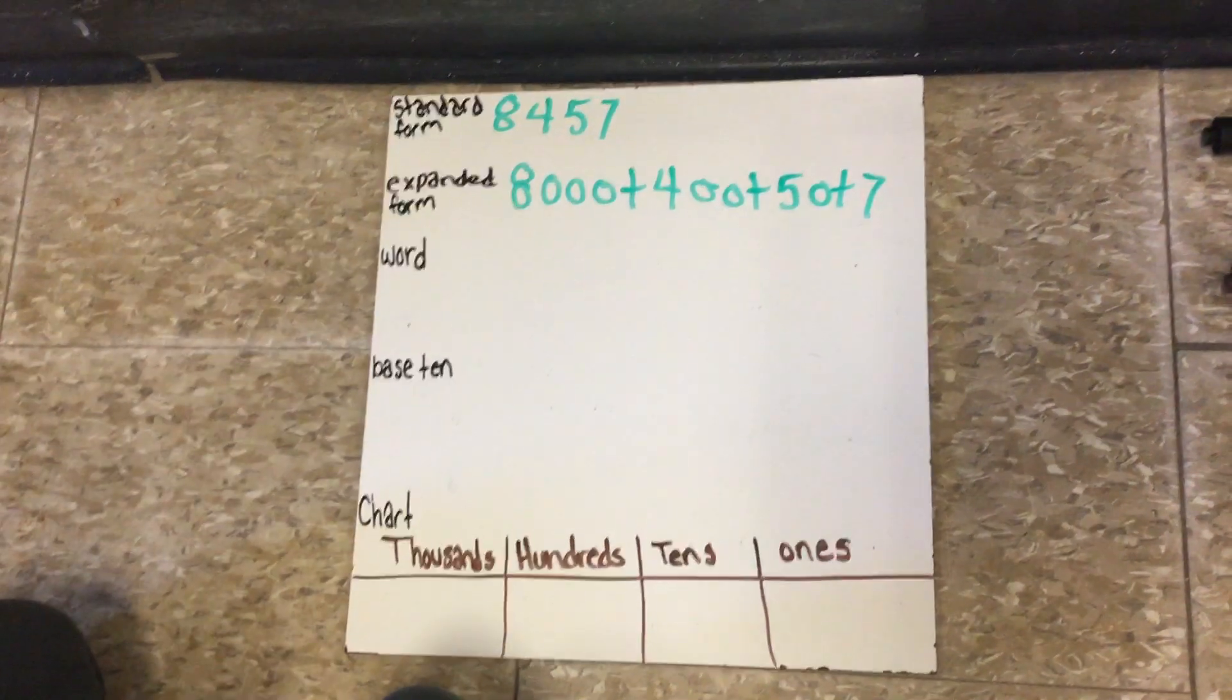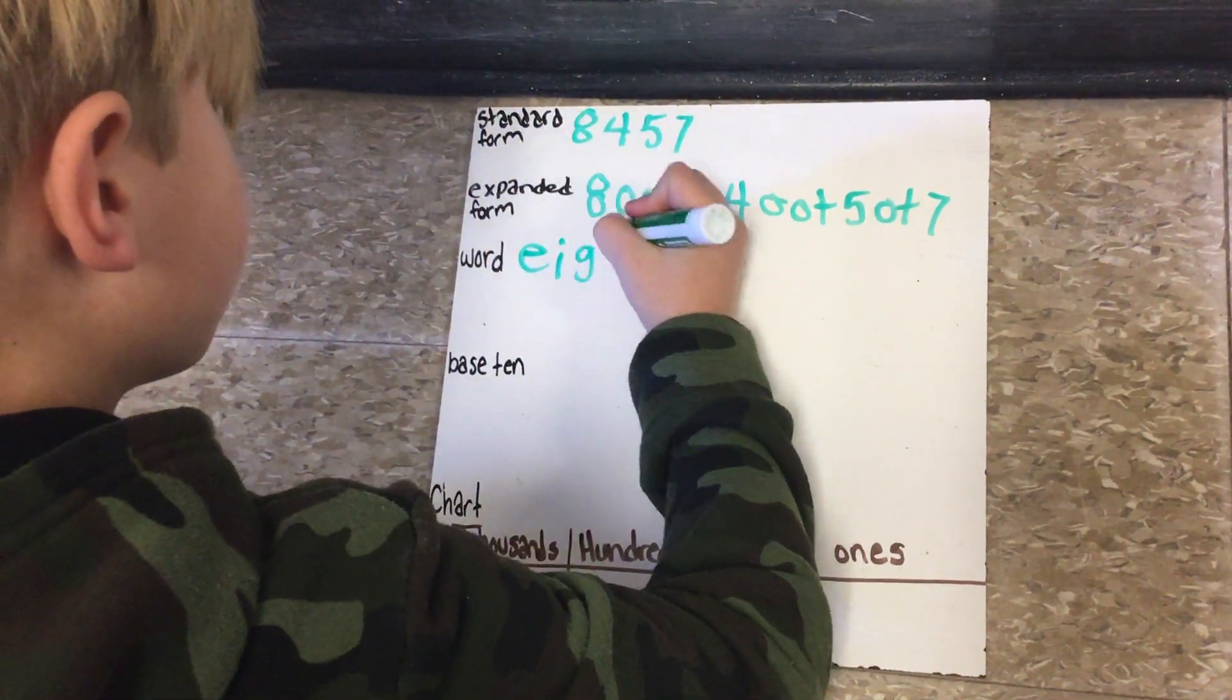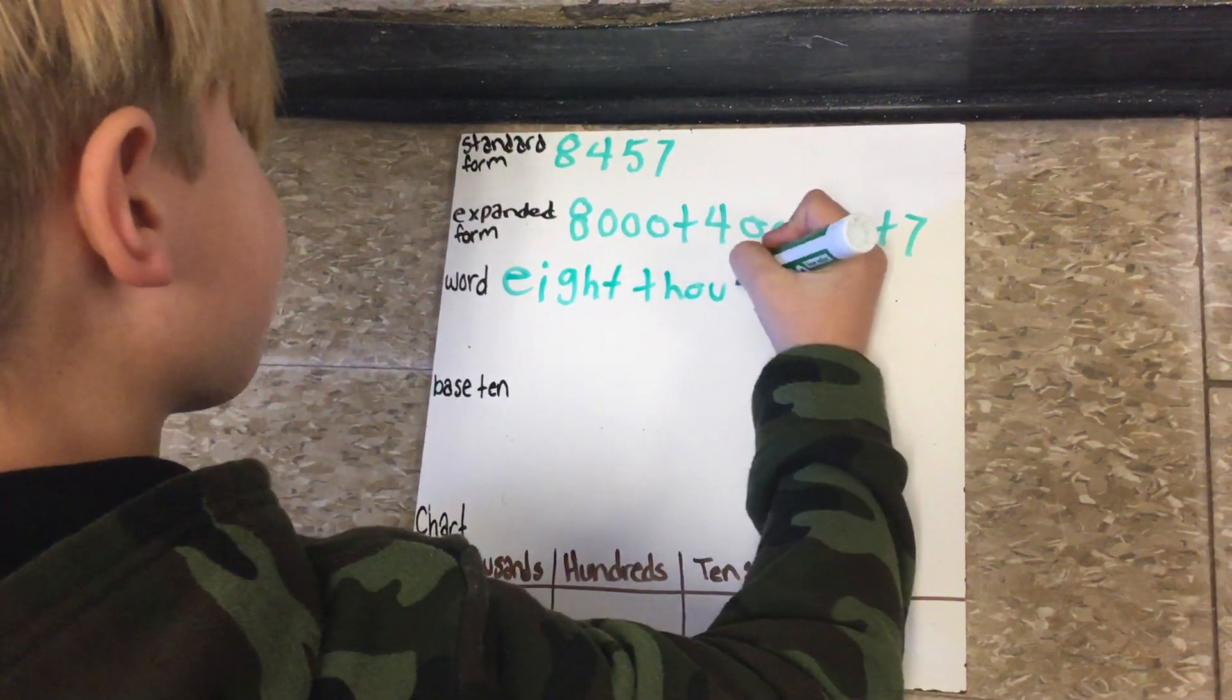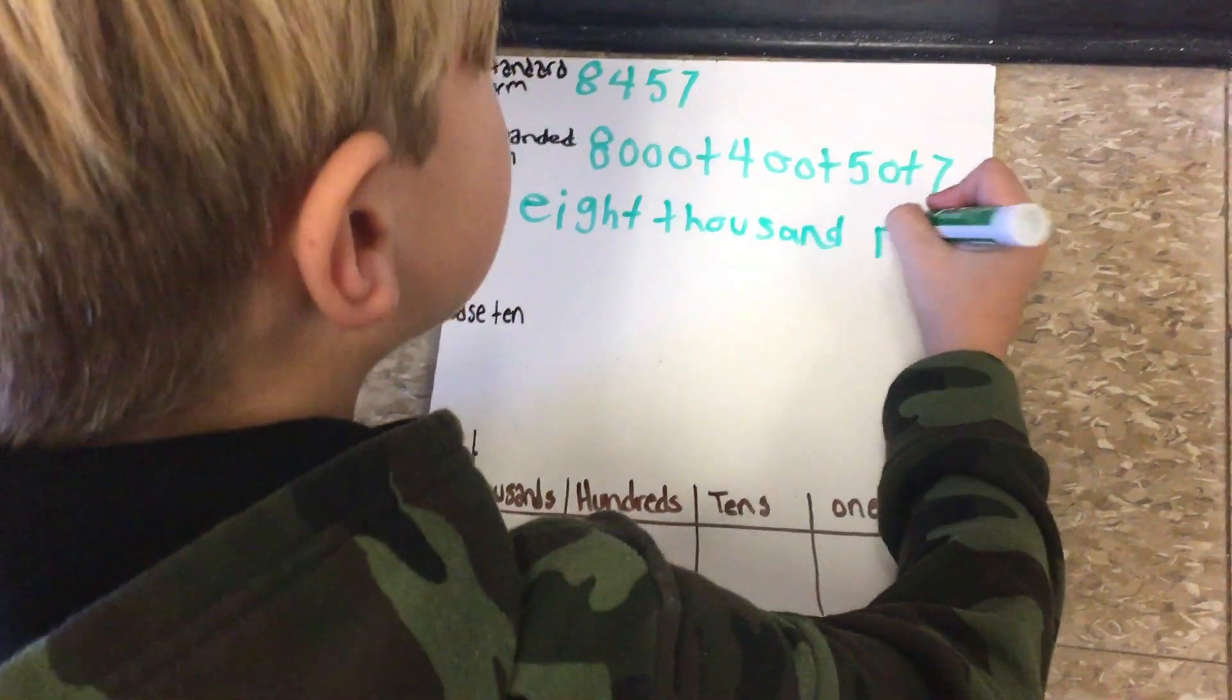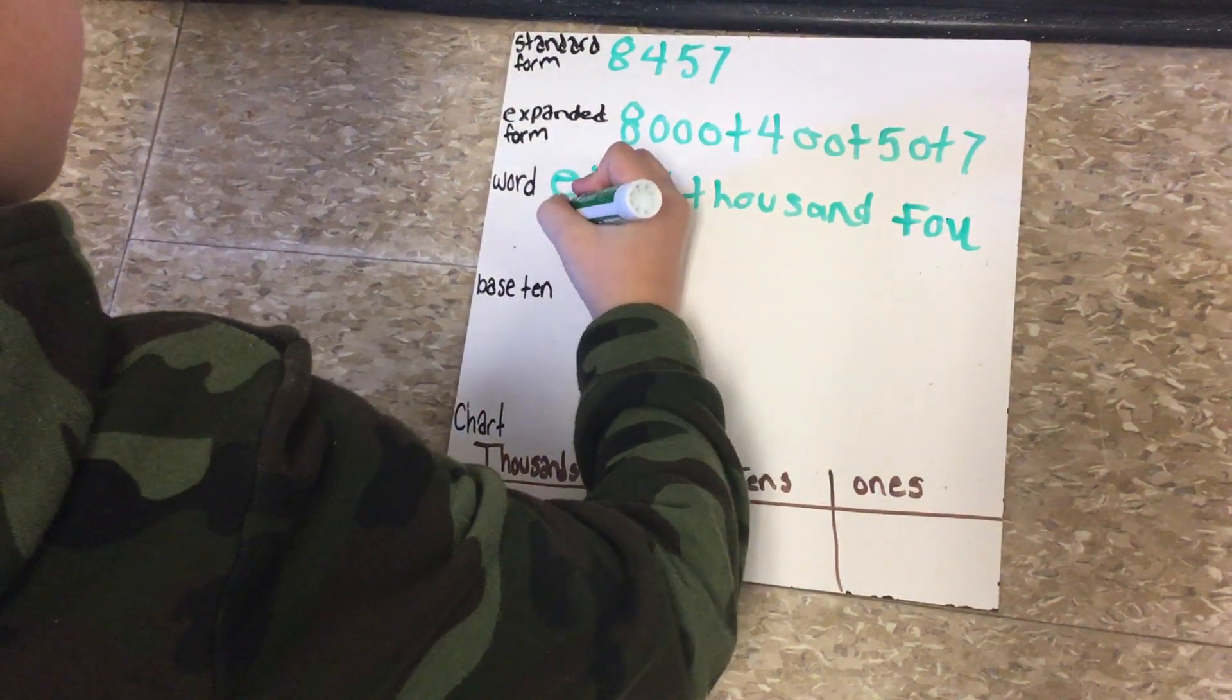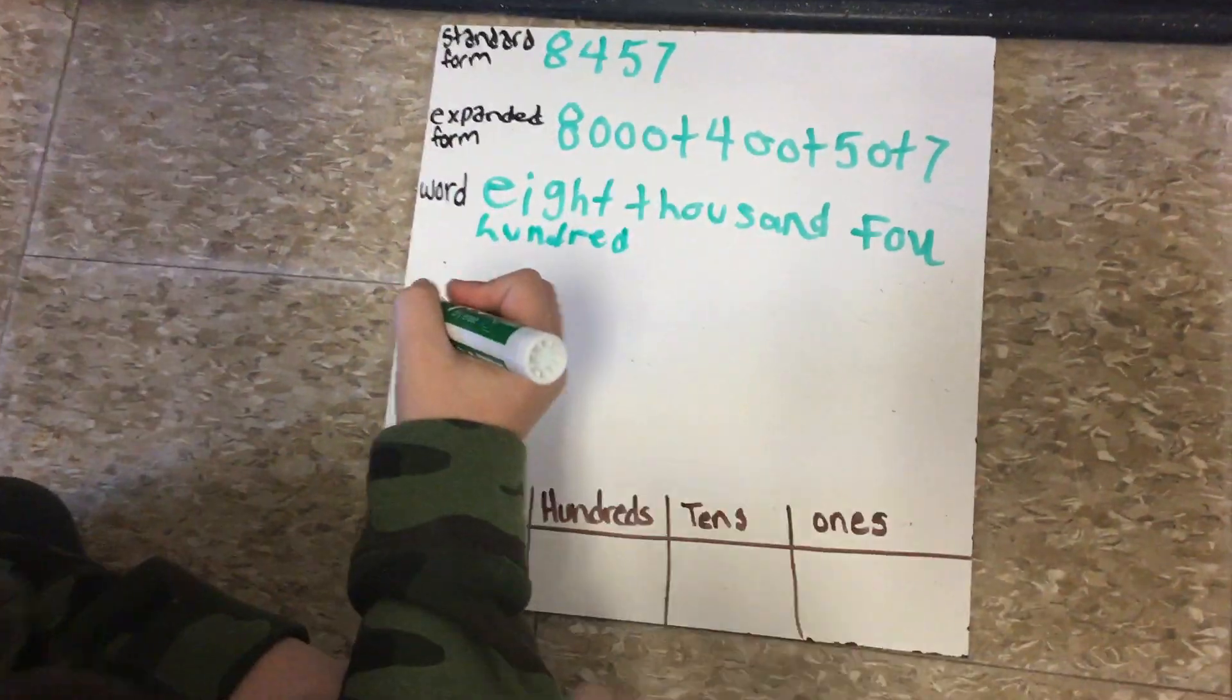When you write the number in words you spell it out and this is how you write it: eight thousand four hundred fifty seven.